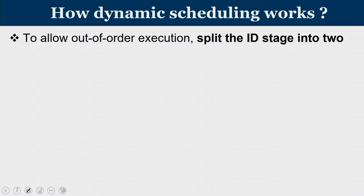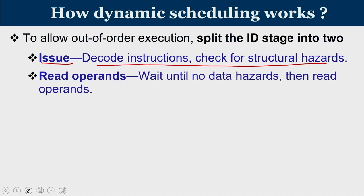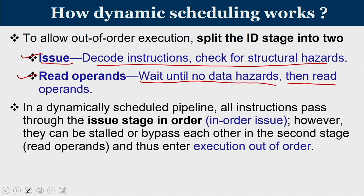To allow out-of-order execution, we split the ID stage into two. One is the issue stage wherein decoding of instructions and checking for structural hazards happens. At the end of the issue stage, your functional unit is ready and you have been assigned to it. While waiting to enter the functional unit, the read operation is performed where you wait until there is a data hazard. Once issue is done, you reach the reservation station associated with the functional unit, and when the operand is available you perform execution. In a dynamically scheduled pipeline, all instructions pass through the issue stage in order, however they can be stalled or bypass each other in the second stage, entering execution in out-of-order fashion.